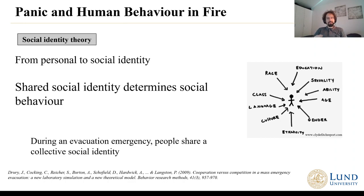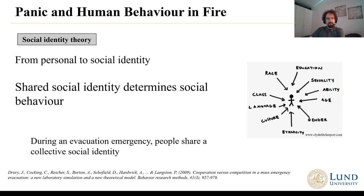The social identity theory tells us that we have different layers of identities. This can be linked to our personal identity, but also social identity, which means that each of us can identify themselves based on their age, gender, race, education, or many other factors that give us a social identity. This means that all of us have different layers of identities, and there are layers that we have in common with others.